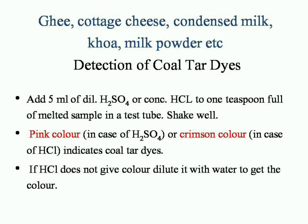Detection of coal tar dye in milk products: add 5 ml dilute H2SO4 or concentrated HCl to 1 teaspoonful of melted sample in a test tube and shake well. Pink color in the case of H2SO4, or crimson color in the case of HCl, indicates the presence of coal tar dyes.